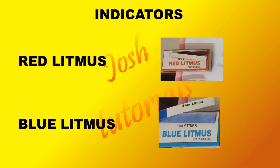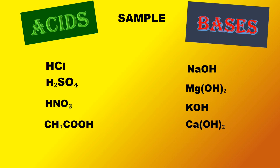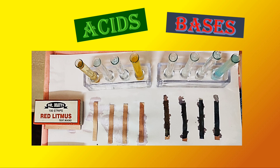In general, in labs we use red litmus and blue litmus to test acids and bases. Take some solutions of acids — hydrochloric acid, sulfuric acid, nitric acid, and acetic acid — and bases — sodium hydroxide, magnesium hydroxide, potassium hydroxide, and calcium hydroxide. Then dip red litmus paper into these acids and bases.